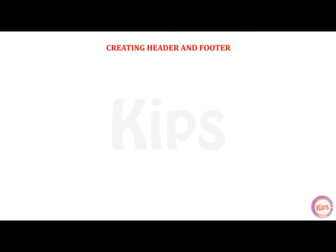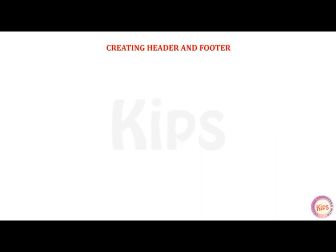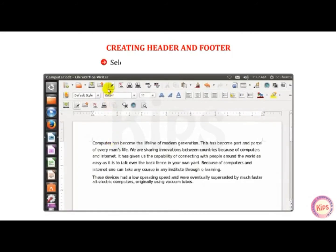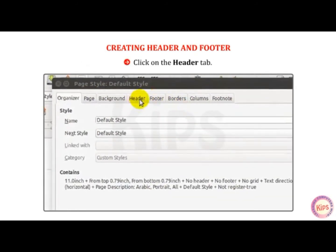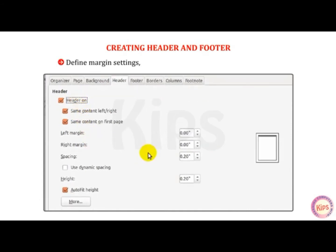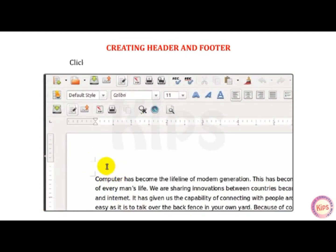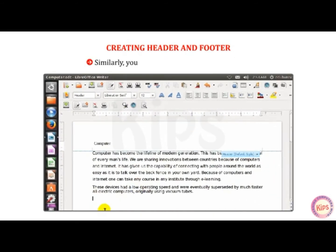Let us now talk about creating header and footer. Header and footer features are used to place information on the top and bottom of every page respectively. You can include the title, chapter heading, date, page number, author's name, etc. Select Format menu, Page option. The Page Style default style dialog box appears. Click on the Header tab and activate the Header option by clicking on the Header On checkbox. Define margin settings, spacing, and height in the respective fields. Click Apply then OK. You will find the header box at the top of the page. Click inside it and type the text you want to display. Press the Tab key twice to move the insertion point to the right side. Similarly, you can add a footer to your document.